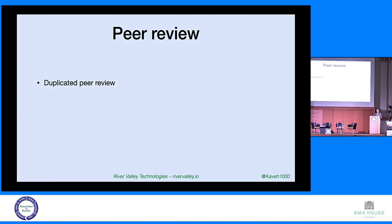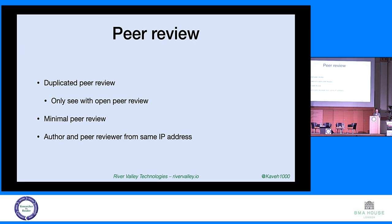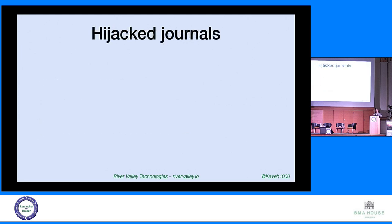Peer review: there are many cases of duplicated peer review. If peer review is open — and it has to be open — you can find that the same phrases or paragraphs have been used across multiple reviews. Minimal peer review, such as just one sentence saying 'this is fine for publication,' should also raise questions. One thing to look at is whether the author and peer reviewers are using the same IP address — someone next door doing their peer review. There's a multitude of things to look at and we've got to keep finding what's coming next. Also, there are hijacked journals: a journal stops publication, someone sets up a very similar site with the same or similar URL, takes APCs, and publishes with no review.